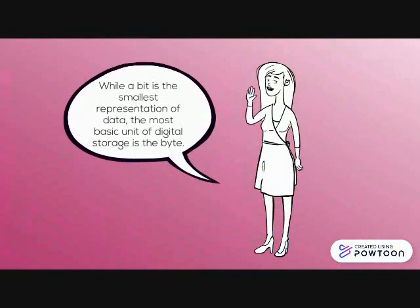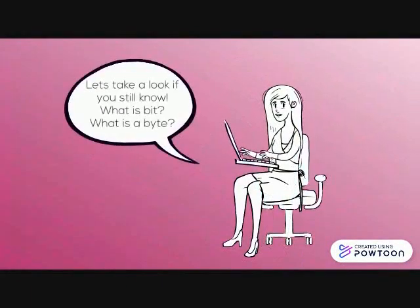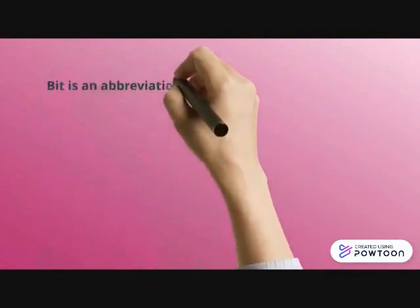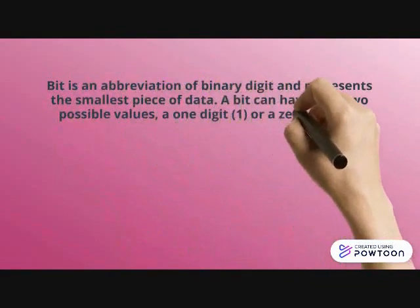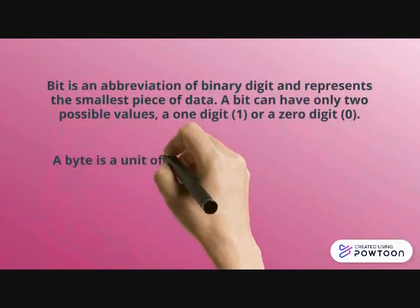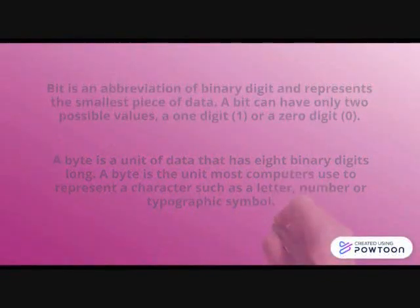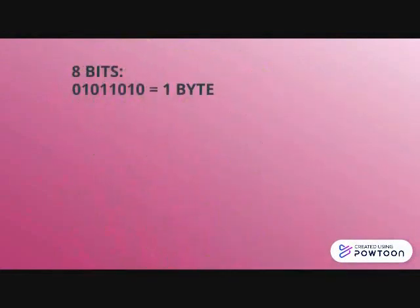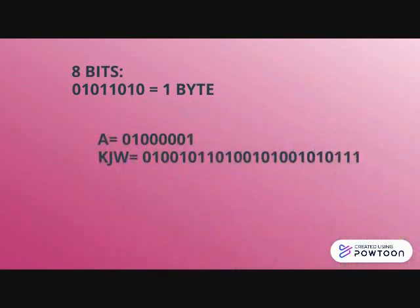While a bit is the smallest representation of data, the most basic unit of digital storage is the byte. What is a bit? What is a byte? Bit is an abbreviation of binary digit that represents the smallest space of data. A bit can have only two possible values, either 1 or 0. However, a byte is a unit of data that has 8 binary digits long. A byte is the unit most computers use to represent a character. When you produce 8 combinations of bits, it's called a byte.